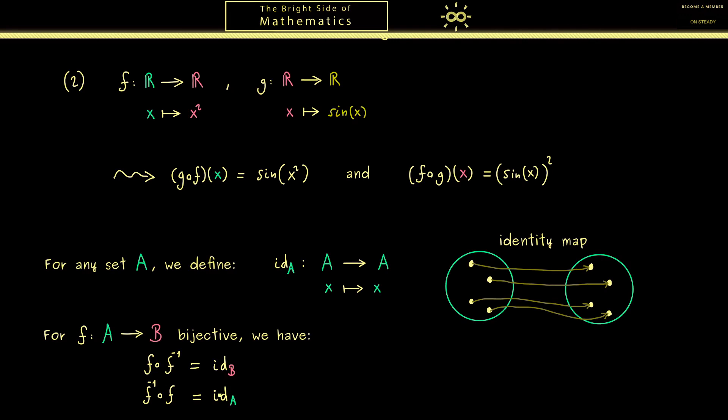And these two equalities explain why the name inverse map fits and why the notation f to the power minus 1 is also useful. With respect to the composition they cancel out, they cancel out to the identity map.